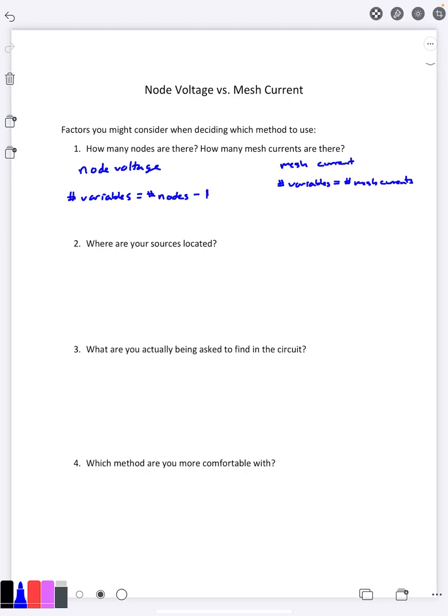For example, let's say you had a node voltage problem here and you had a whole bunch of voltage sources but they were all attached to one fixed node. Well, because you can pick the bottom to be ground, you immediately get to find out what these other nodes are going to be and it saves you a whole bunch of time. So if you have a lot of voltage sources attached to a single node, that's a good thing to use node voltage.